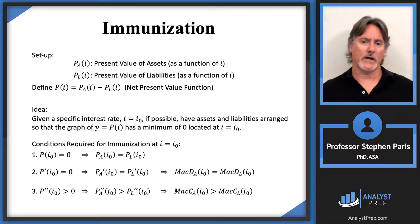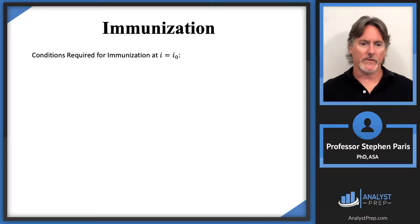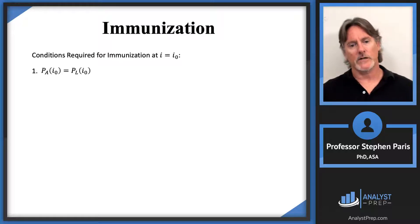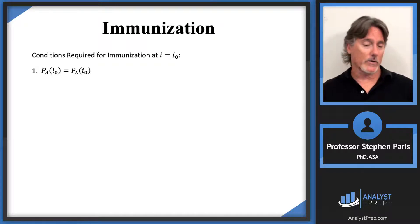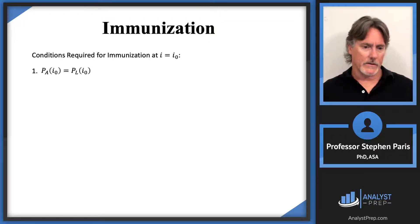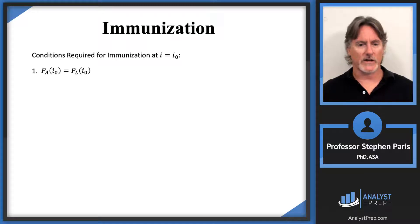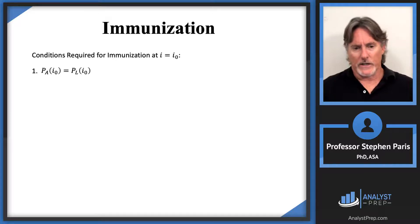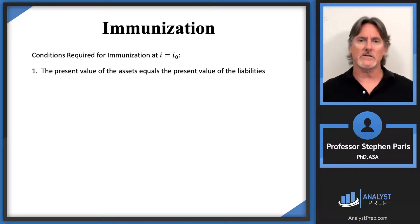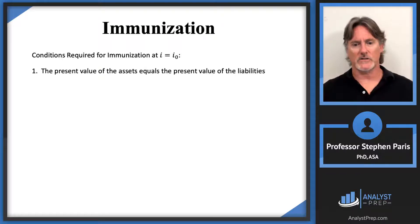Let me clean up and summarize the conditions required for immunization at I equal I-naught. The first condition, mathematically, is that the present value function of the assets equals the present value function of the liabilities at interest rate I-naught. In simple words: the present value of the assets equals the present value of the liabilities.